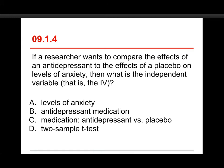Now, number four, if a researcher wants to compare the effects of an antidepressant to the effects of a placebo on levels of anxiety, then what is the independent variable, that is, the IV? And the choices are level of anxiety, or antidepressant medication, or medication: antidepressant versus placebo, or two sample t-tests. The answer here is the third one, medication, and then colon, antidepressant versus placebo. Now, levels of anxiety is the dependent variable, it's the outcome variable.